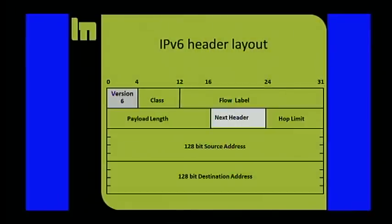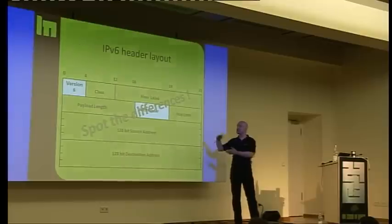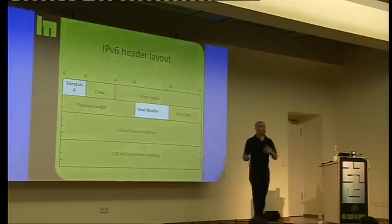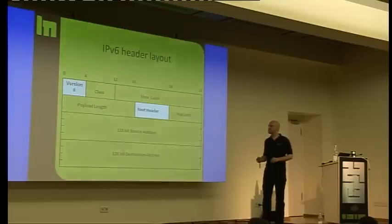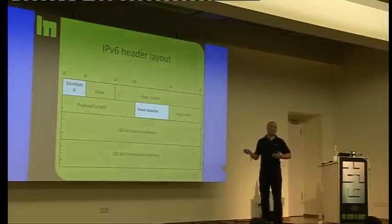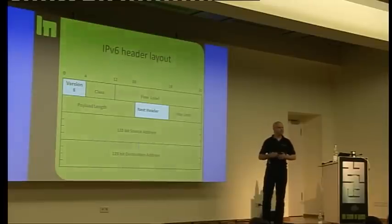This is how the IPv6 header looks like. If you know IPv4, you know there's lots more stuff, so this looks very clean. Where are the differences? What is the difference here to an IPv4 header? Well, the version, of course, is different.